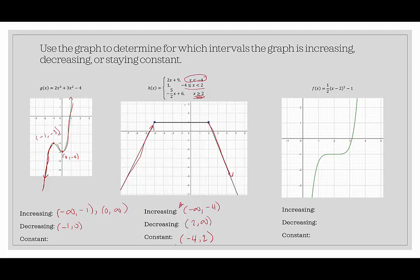In our last example, we have a degree-5 polynomial. It is always going up, so it's always increasing. Since the domain of this function is all real numbers, we say it's increasing from negative infinity to infinity. You might think it looks flat in the middle, but it actually isn't — it's ever so slightly increasing no matter what. If you don't believe it, plug in values like 1.5, 1.6, and 1.7, and you'll see each output is slightly larger than the previous one.